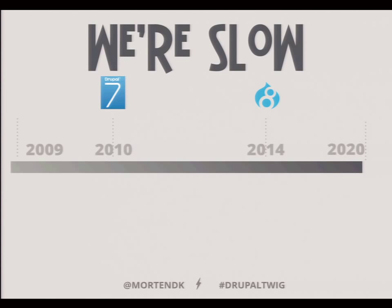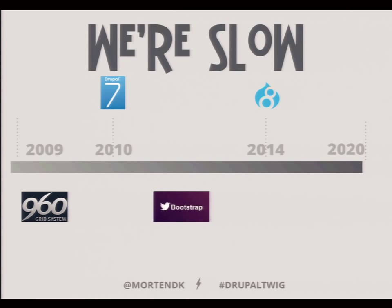Another issue is that we are slow. This is Drupal 7 in 2010, we're in 2014 now. There was serious talk about implementing 960 grid systems inside of Drupal's core back in 2009-2010. There was even a movement to get Bootstrap in. The thing about trying to put these systems inside Drupal core is that we adapt so slow. When 960 was hot, that was 2009-2010; when Bootstrap was really hot, it was a couple of years ago. Our release cycle doesn't work that fast, so no matter what we put into Drupal core, it's going to be outdated as soon as it comes out.